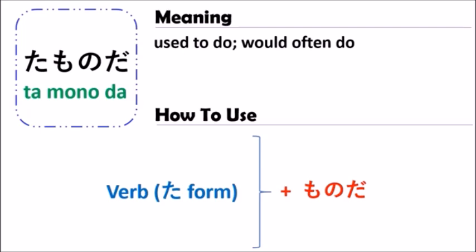You should change the verb to be the past tense form, as in たものだ. The た comes from the past tense of the verb.